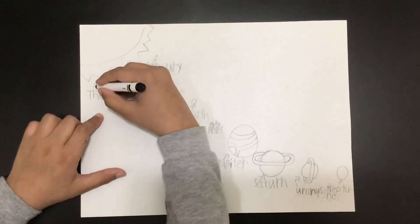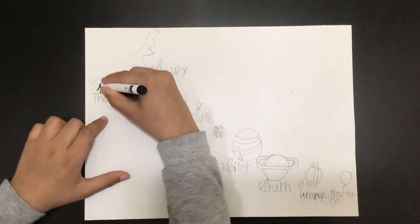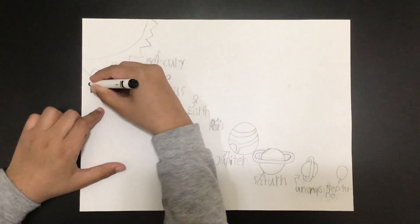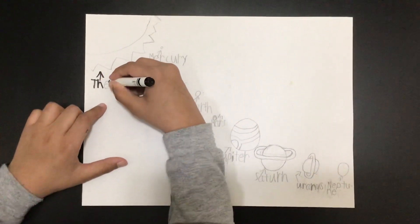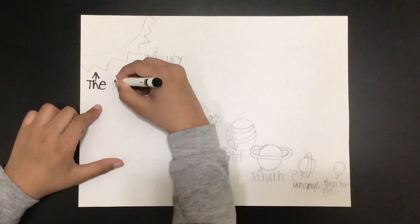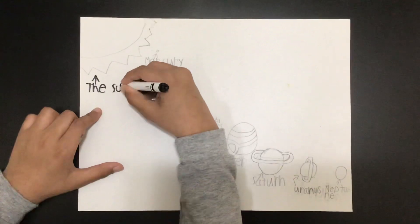First is the sun. It is our star. We use the sun's energy to create electricity so we could use electronics.